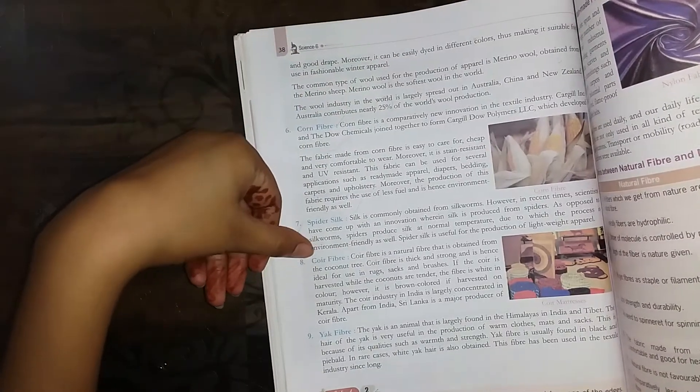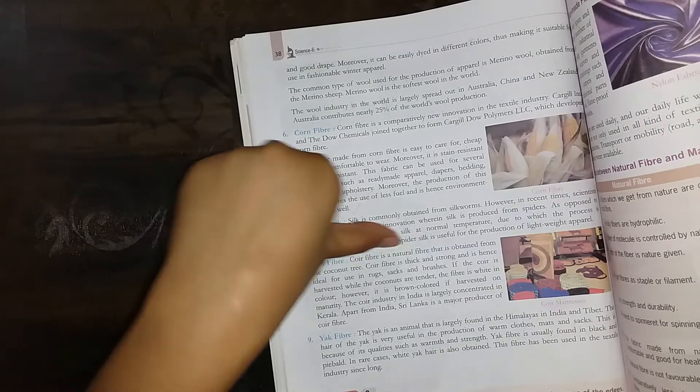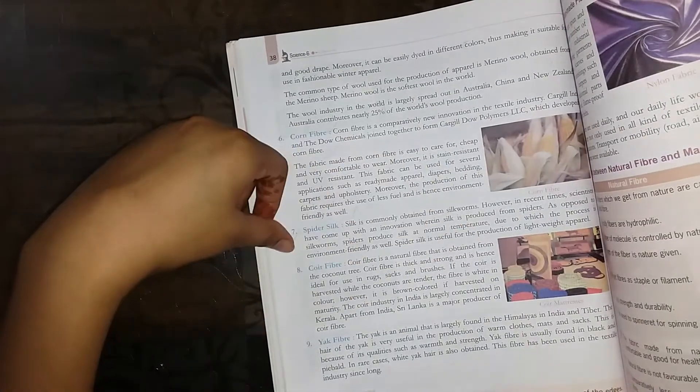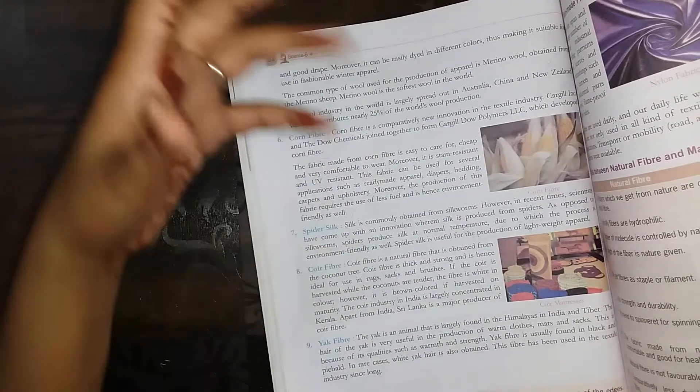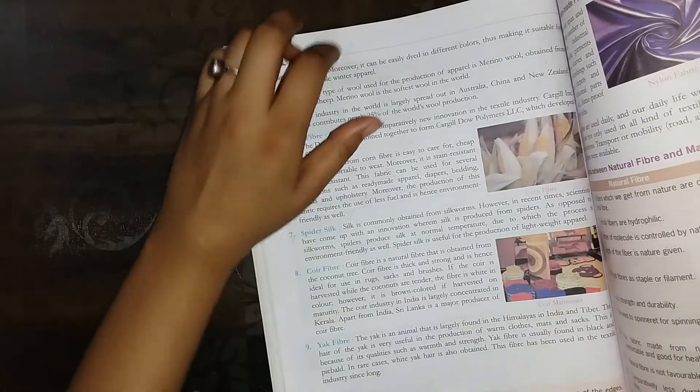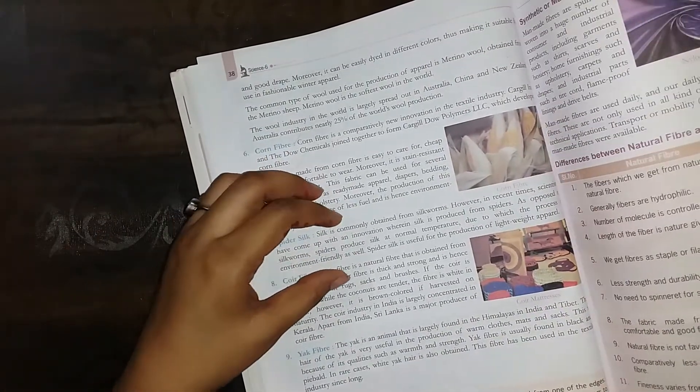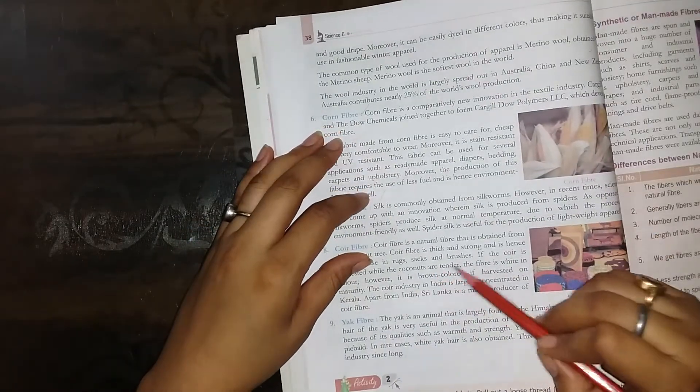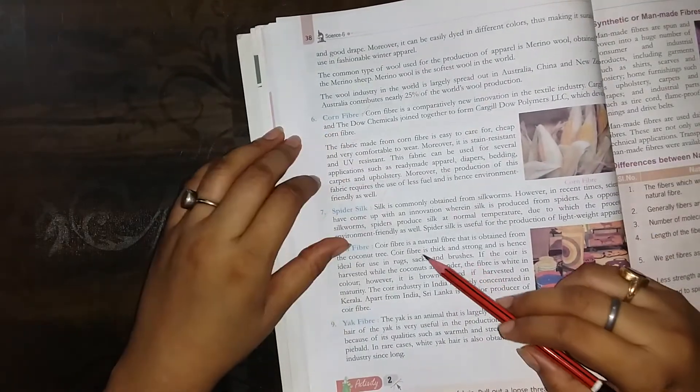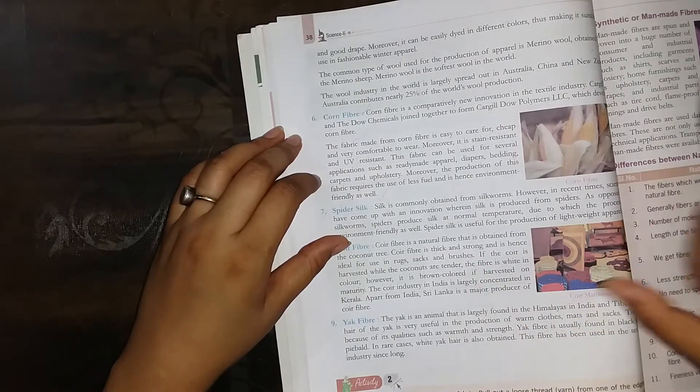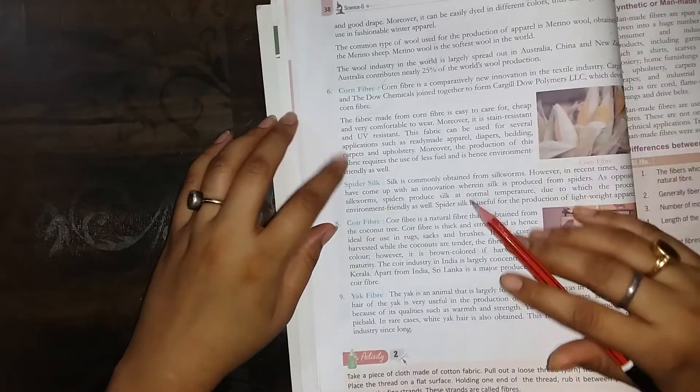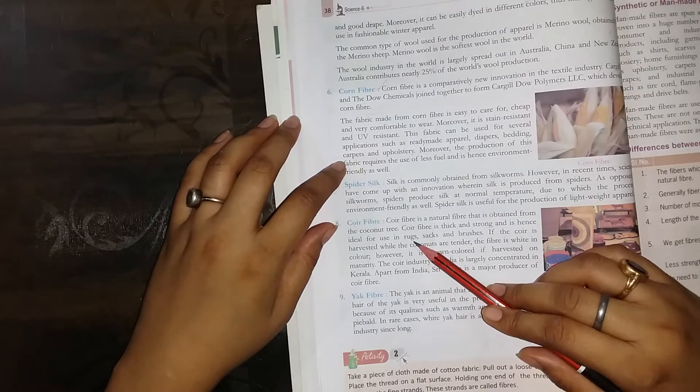Coir fiber. Now what is coir fiber? Coir fiber is a natural fiber that is obtained from the coconut tree. Coir fiber is thick and strong and is hence ideal for use for rugs, sacks, and brushes.